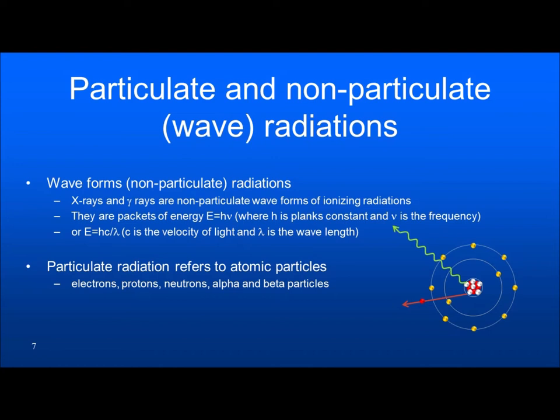These are packets of energy. The energy is expressed in the form E = hν, where h is Planck's constant and ν is the frequency of radiation. The energy can also be obtained from the equation E = hc/λ, where c is the velocity of light and λ is wavelength. Particulate radiation, on the other hand, refers to atomic particles — electrons, protons, neutrons, alpha and beta radiations.